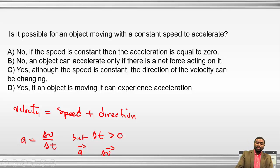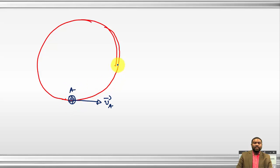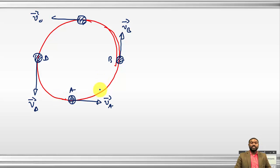Consider an object moving in a circle. At position A, the velocity vector VA is to the right. At position B, VB is vertically upward. At position C, VC is to the left. At position D, VD is vertically downward. You can recognize that this object is moving in a circular path.